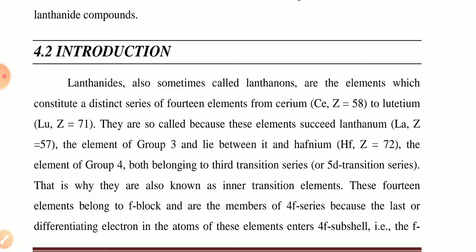This element belongs to group 3, and the lanthanides lie between lanthanum and hafnium. So lanthanum occurs between elements 57 to 71, and hafnium is included in group 4 elements.